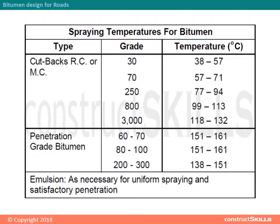For penetration grade bitumen: 60–70 grade temperature is 151–161°C; 80–100 grade temperature is 151–161°C; 200–300 grade temperature is 138–151°C. For emulsion type, temperature is as necessary for uniform spraying and satisfactory penetration.